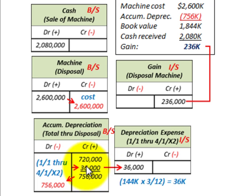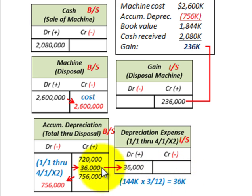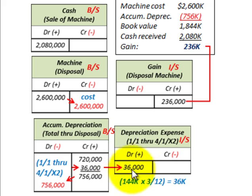We then calculate depreciation for the year through 4/1/X2, which is $144,000 times 3 months, giving us $36,000. We add that to accumulated depreciation and recognize it as depreciation expense on our income statement for the period 1/1 through 4/1/X2, debiting $36,000. Our total accumulated depreciation is then $756,000, which we remove off the books.